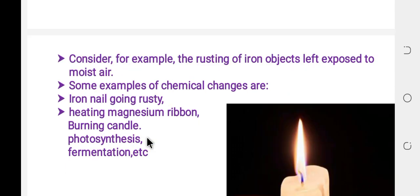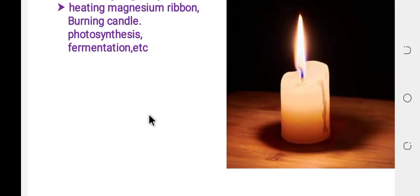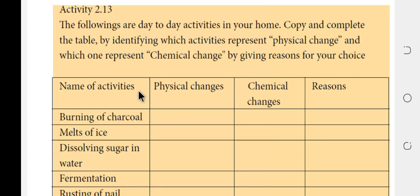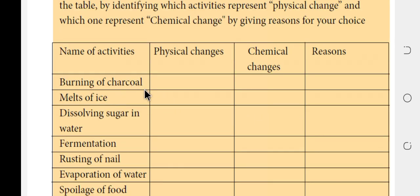Other examples of chemical change include: iron nail going rusty, heating magnesium, burning a candle, photosynthesis, fermentation, explosion, and burning charcoal. Burning charcoal is a chemical change because new substances — ash — are formed.